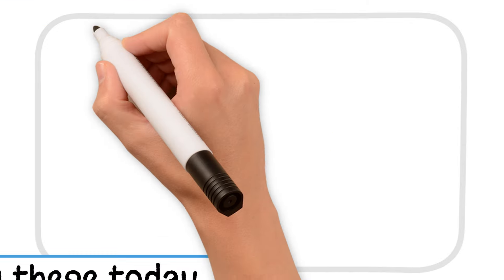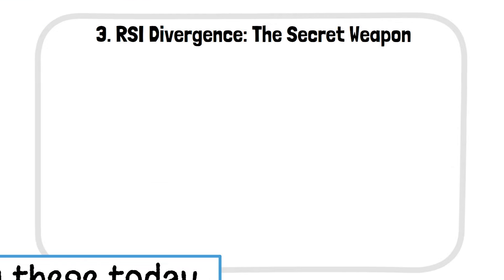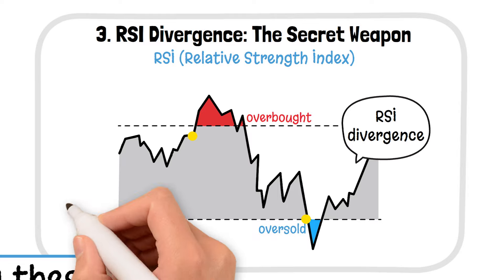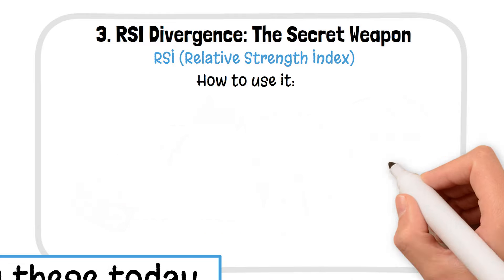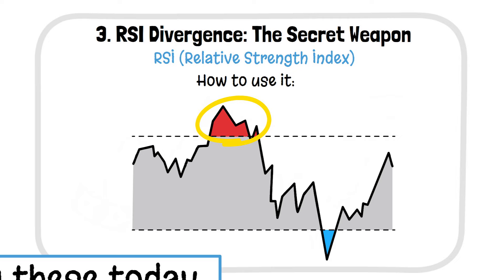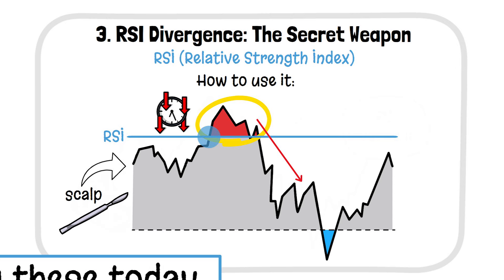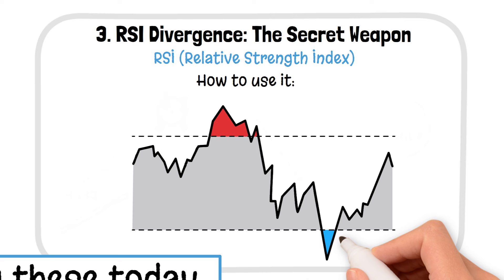Third, RSI Divergence. Most traders use RSI to figure out when something is overbought or oversold, but there's a trick called RSI Divergence that can really help you catch reversals in price. If the price is making higher highs but the RSI is making lower highs, it means the momentum is slowing down and the price could drop. That's when you jump in to scalp before the price reverses. The same goes for the other way around: when the price is dropping but RSI is showing strength, it's likely the price will bounce back up soon.